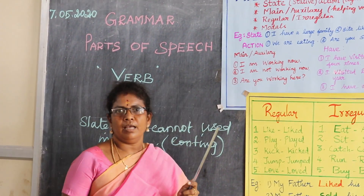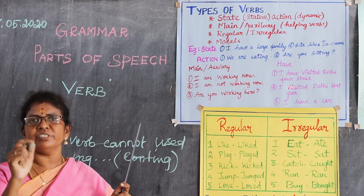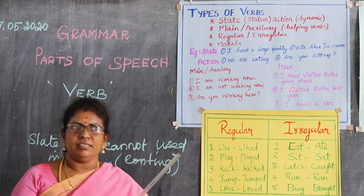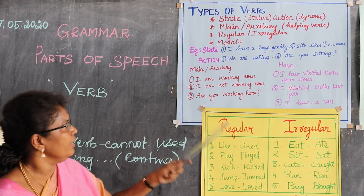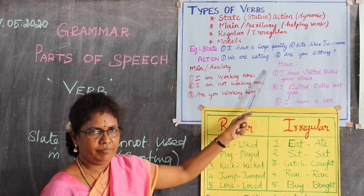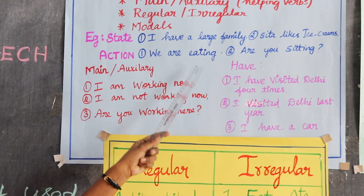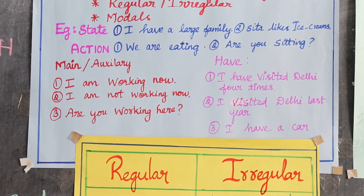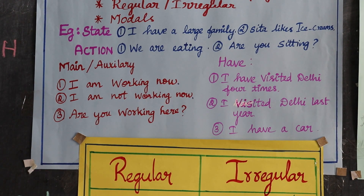What is an action verb? Action verb is a physical activity, like kick, eat, sit, wrap, etc. For example: 'We are eating' and 'Are you sitting?' Eat and sitting are the main verbs here, showing physical activity, so we can use the ING form.